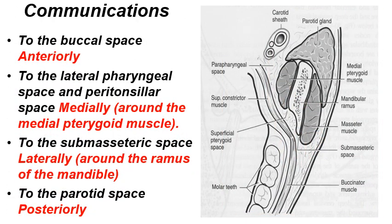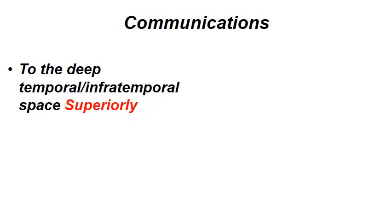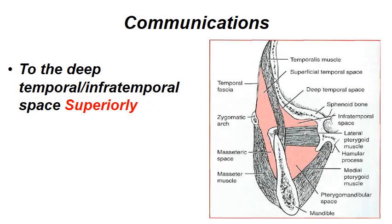The pterygomandibular space communicates with the buccal space anteriorly, with the lateral pharyngeal and peritonsillar space medially around the medial pterygoid muscle, with the submasseteric space laterally around the ramus of the mandible, posteriorly to the parotid space, and superiorly to the deep temporal and infratemporal spaces.